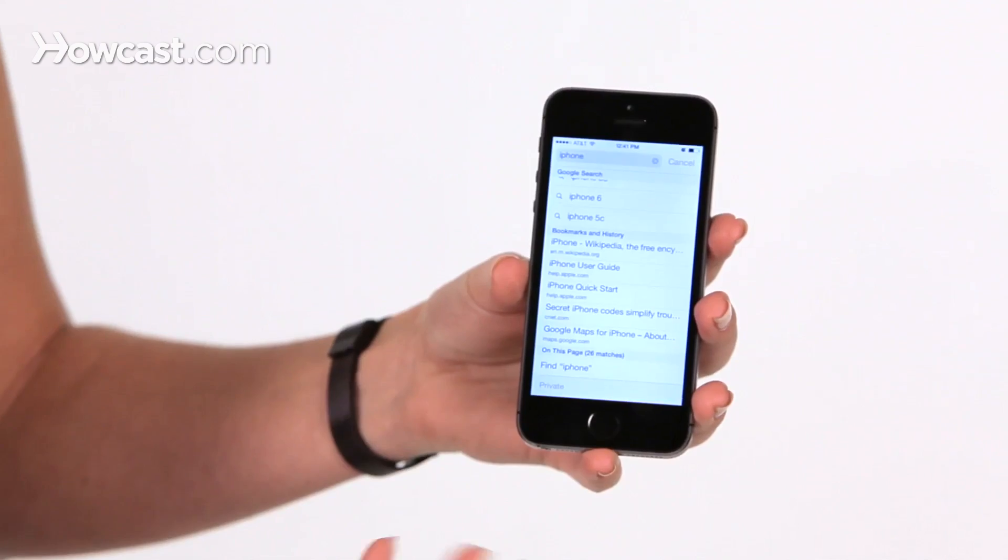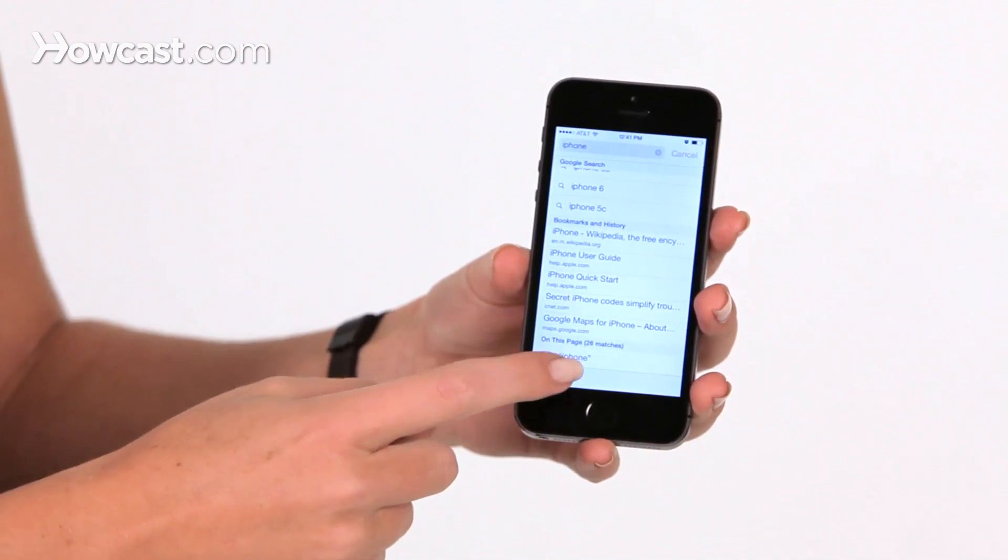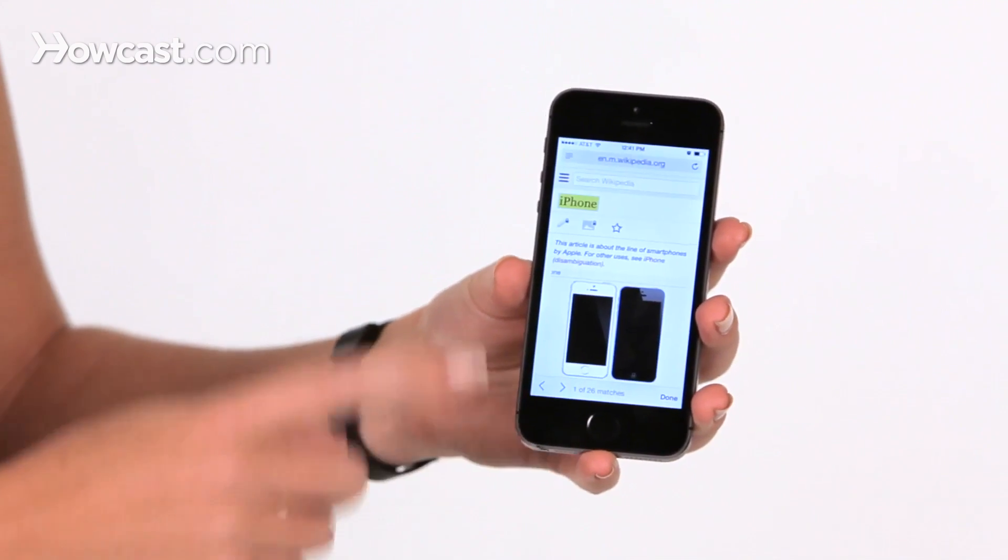It will tell you how many mentions there are of that word. So in this case we have 26. So then you tap on find iPhone, and it will highlight in yellow every occurrence of the word on the page.